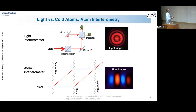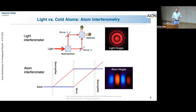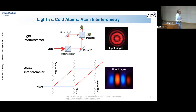In laser interferometry, the active element is laser light which you shine on a beam splitter. You have two different paths opening for the laser light, and you reconnect them with mirrors in the detection system. What you measure are the light fringes, and from the fringes you can deduce whether something different happened in the two paths. That's the technology we've been utilizing to measure gravitational waves so far.